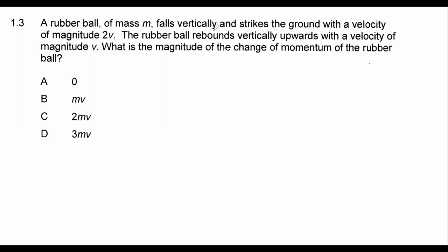So it says that a rubber ball of mass m falls vertically and strikes the ground with a velocity of magnitude 2v. So this one, I think I want to draw a picture.